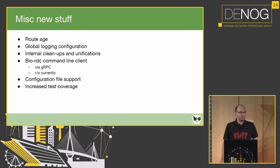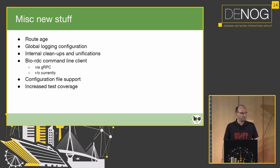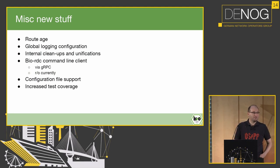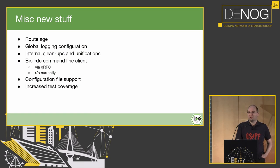Miscellaneous stuff: it was interesting to store the route history — simple stuff. Global logging configuration was a PR we are very thankful for; we now have a global configuration for logging so you can set the log level which will be adhered to in every part of bio. We did a lot of cleanups and unifications — sorry for everyone using it as a library. We have added a CLI client which also uses a gRPC interface — currently read-only but will become read-write. Configuration file support is there, and we increased test coverage recently.